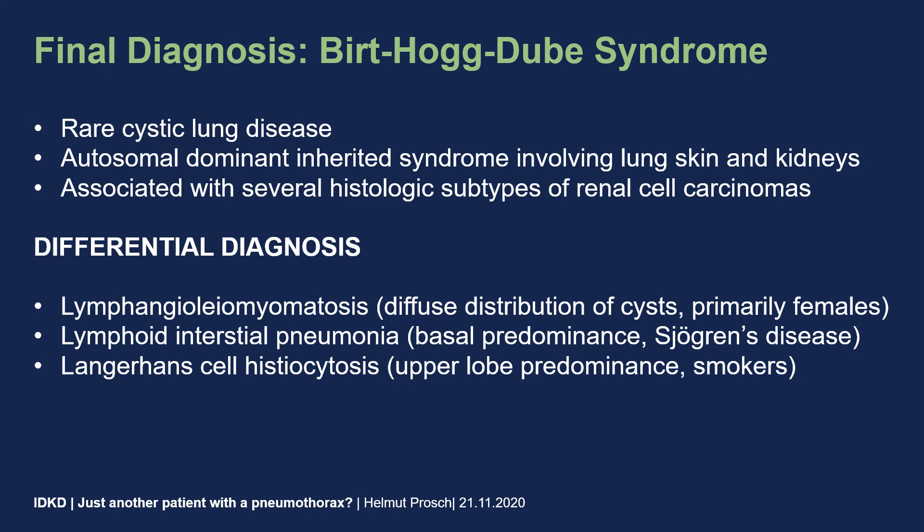Birt-Hogg-Dubé syndrome is quite a rare cystic lung disease; however, we see it from time to time in patients presenting with a pneumothorax or recurrent pneumothorax. Importantly, this is an autosomal dominant inherited syndrome which involves, besides the lung, also the skin in the form of hamartomas, and the kidneys in the form of renal cell carcinoma. These renal cell carcinomas vary quite from patient to patient, with several histologic subtypes. Patients with this diagnosis need to be followed over time in order not to miss the development of a renal cell carcinoma, and thus the diagnosis of this syndrome is quite important.